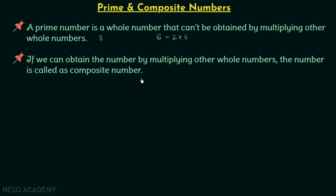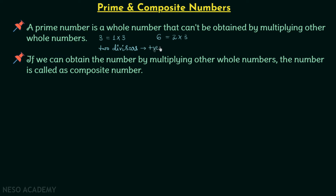If we talk about the prime number three, we can have it by multiplying one and three. This means three is perfectly divisible by one and itself. So all prime numbers are perfectly divisible by one and itself — they have exactly two divisors, and those two divisors are positive.